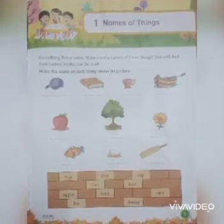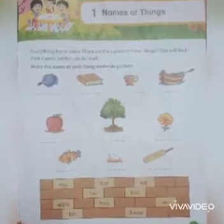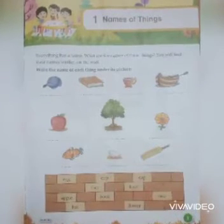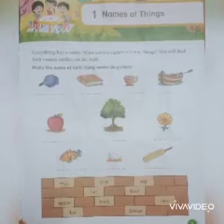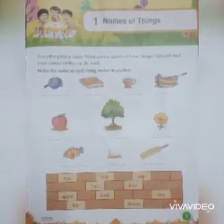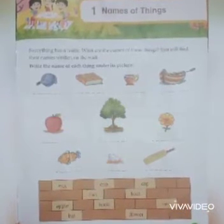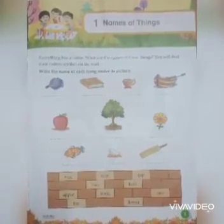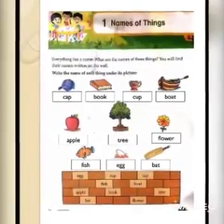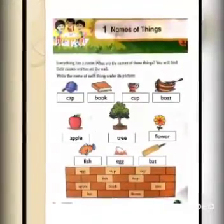Today we will just learn about names of things. Open page number 1 and mark D&D on top of the page. My dear students, here is one interesting activity — you will enjoy it a lot. Names of things. This activity is relating to naming words. Here are some names of things on the wall. You will pick up the correct names of things and write on the lines. Now look at the first picture and start writing. First one is cap. Second is book. Third one is cup. Next is boat.